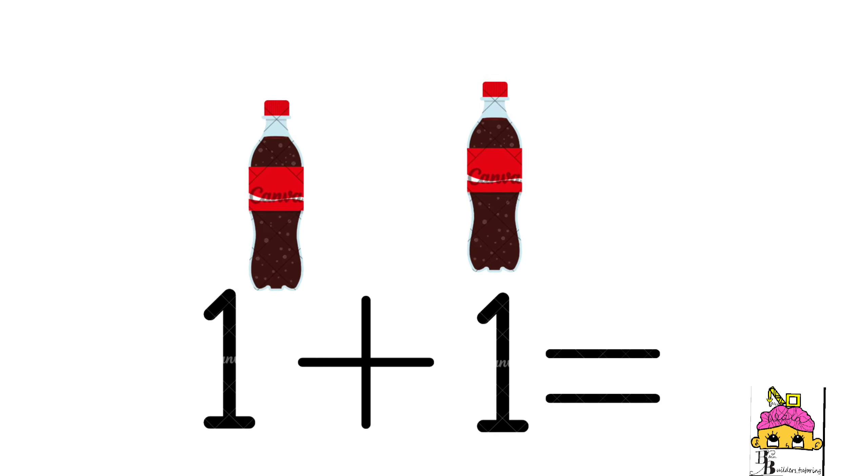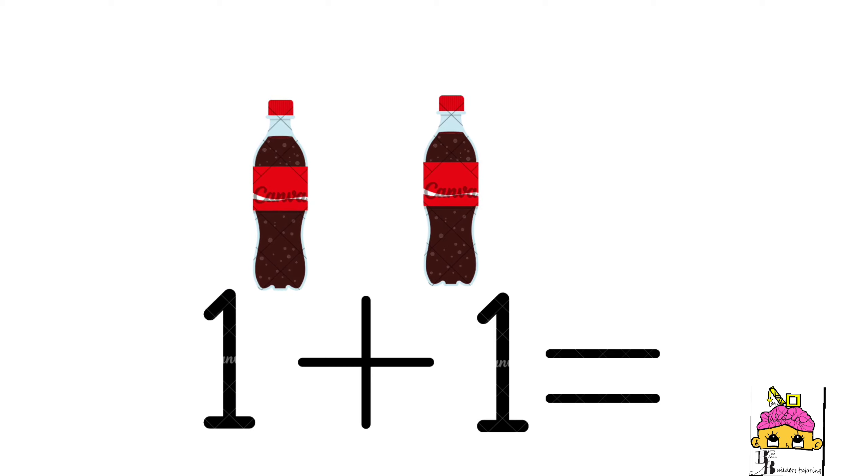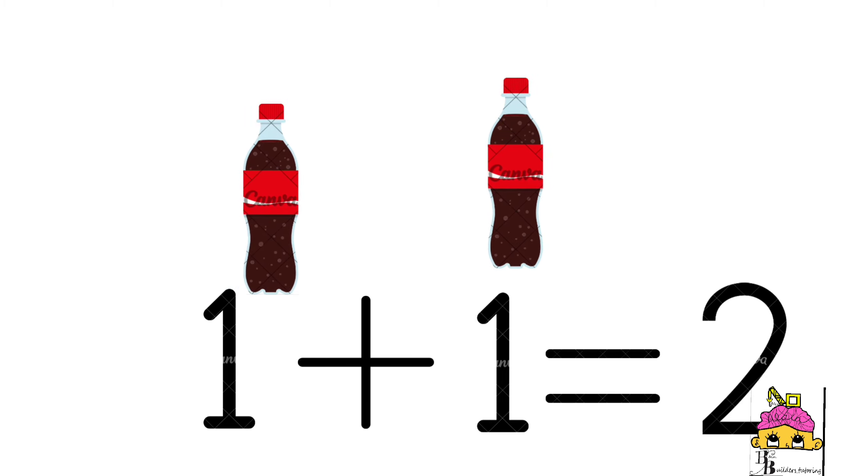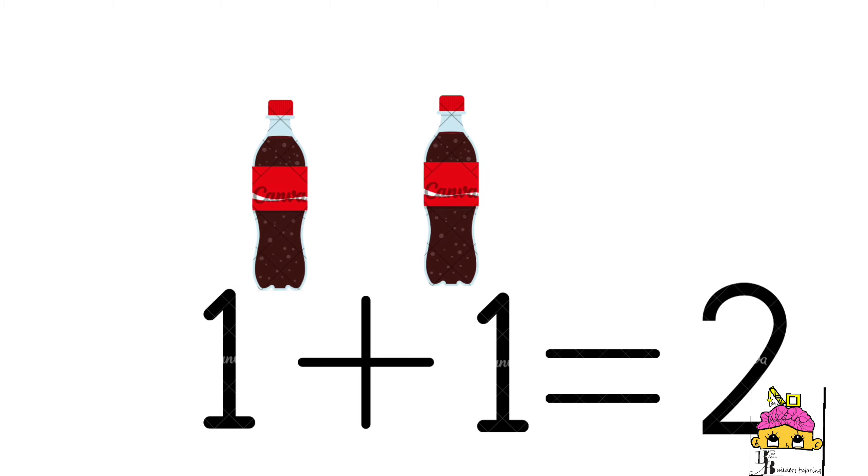If we have one soft drink and another soft drink on the other side, it now represents to be 1 plus 1. 1 plus 1 is now equal to 2 because it's 2 in all.